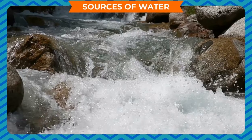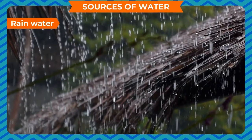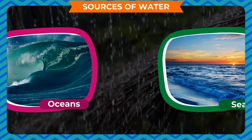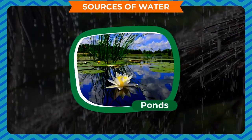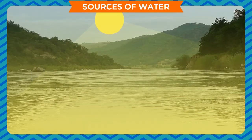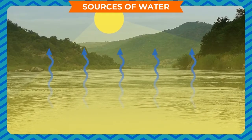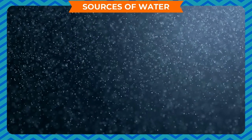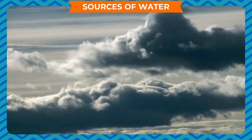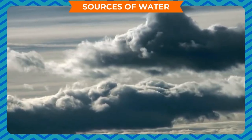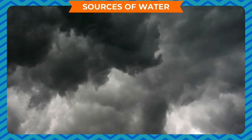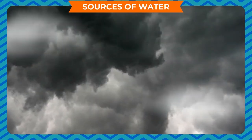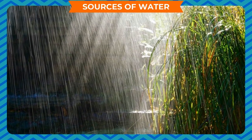Sources of water — rain water: Rain is the major source of fresh water on the earth. Water from the oceans, seas, lakes, rivers, and ponds vaporizes in the presence of sunlight and rises upward into the sky. Water vapor in the sky mixes with dust particles to form clouds in the troposphere. When these clouds strike cold atmospheric air, they condense and convert into drops of water, falling on the earth as rain.